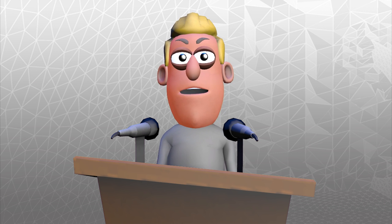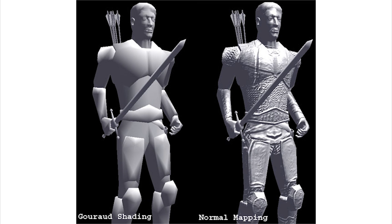This makes the models look much more detailed without the need for very high polygon counts. Here's an example of the effect adding a normal map can have. Both of the models in this image have identical polygon counts but the one on the right has a normal map applied. The pixel shader takes the data provided by the normal map and uses this to adjust the colour of the pixels depending on how they should react to the light that is being applied.